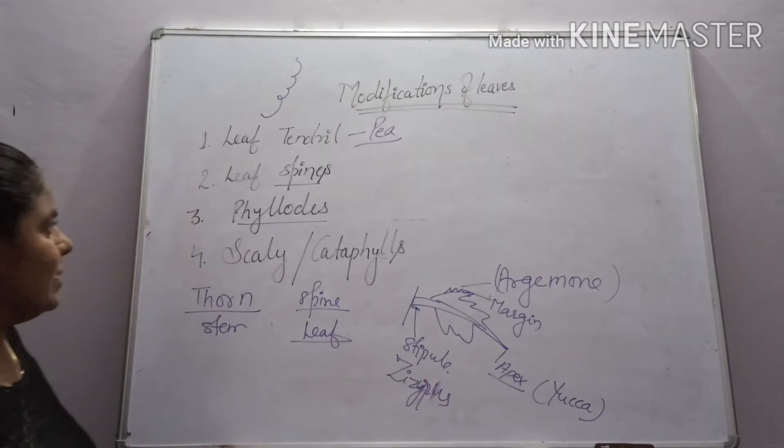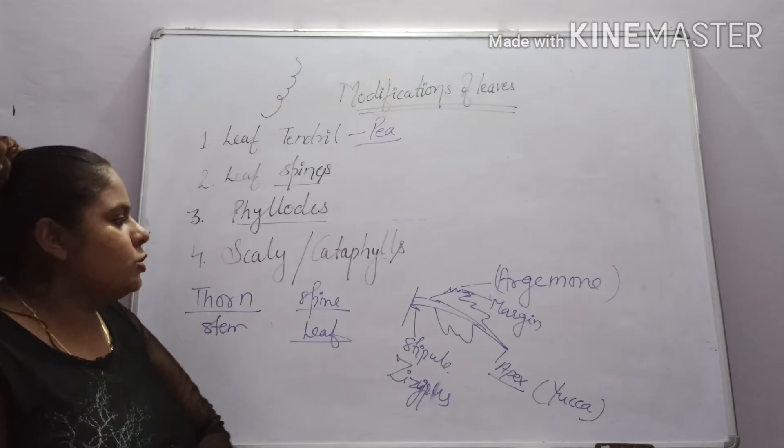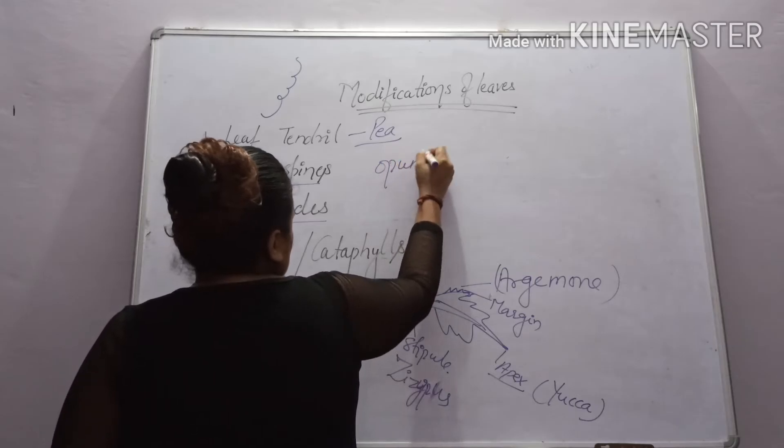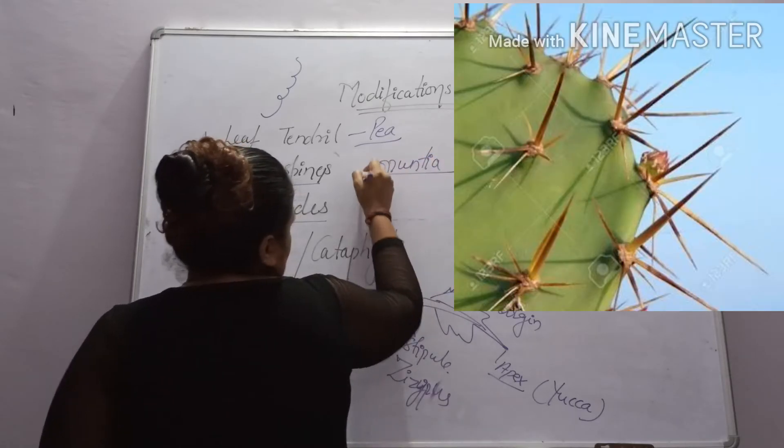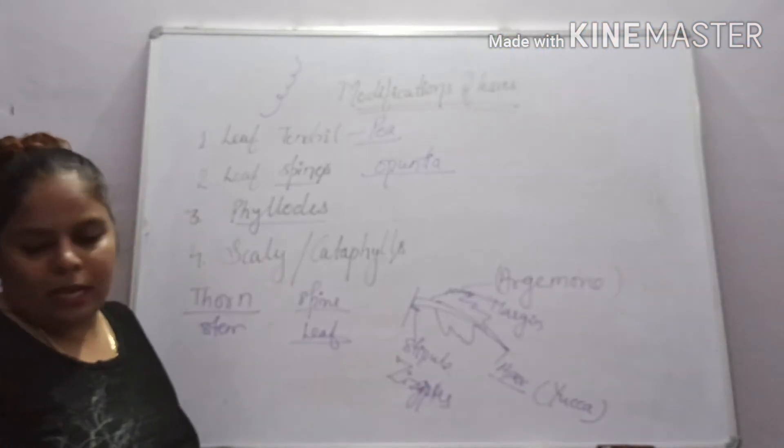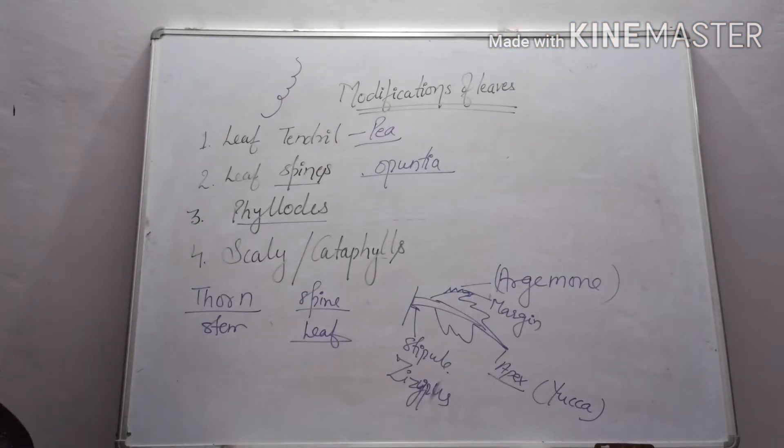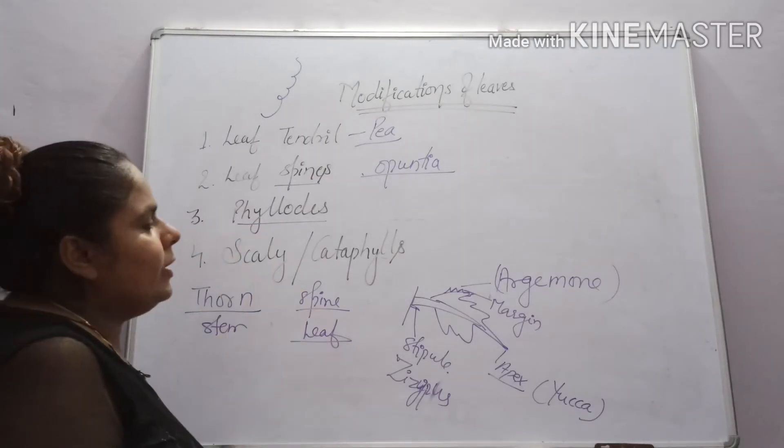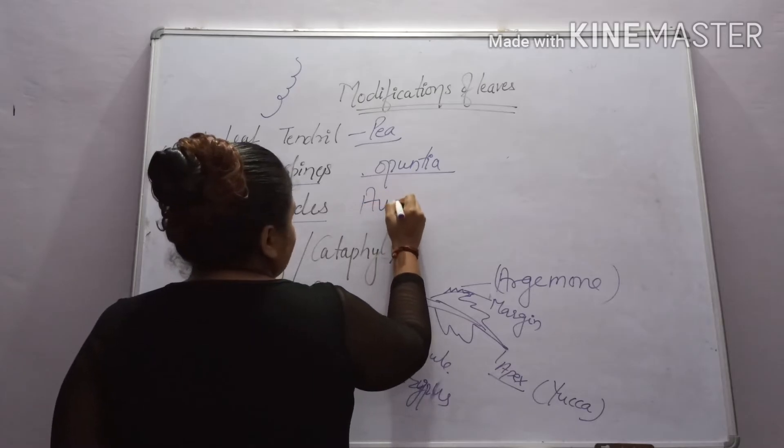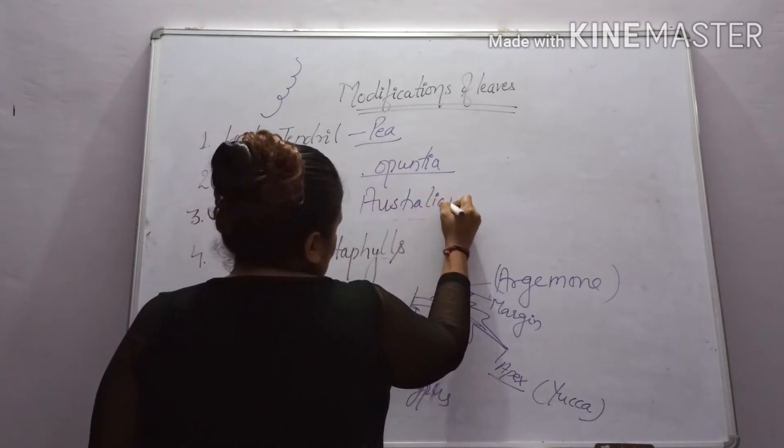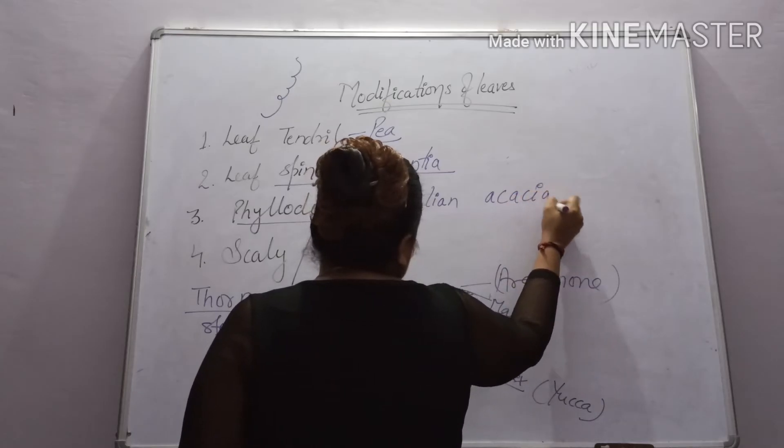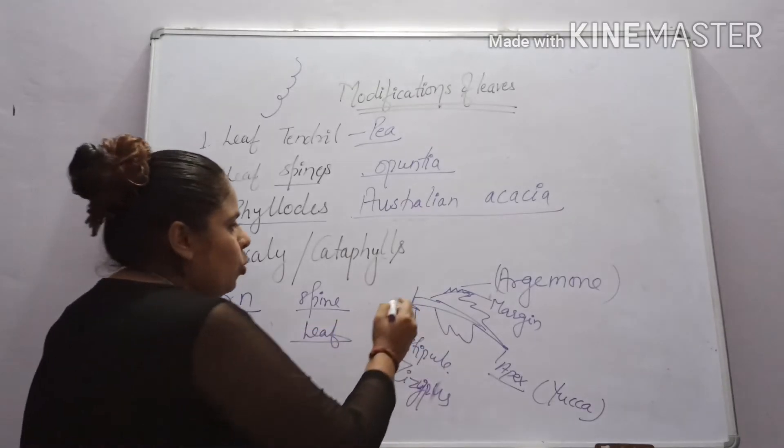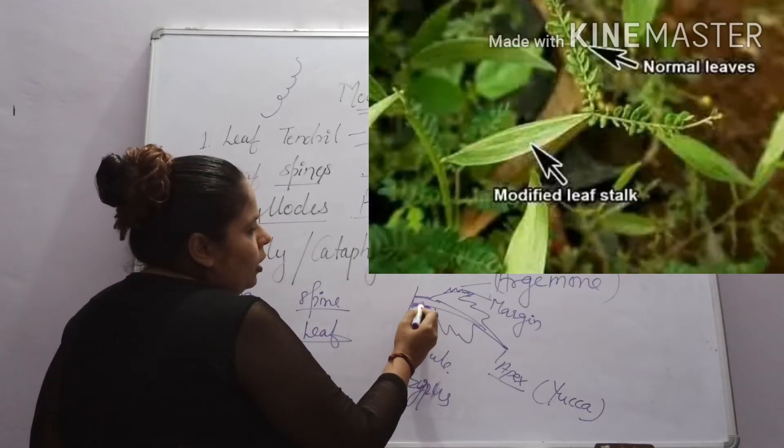Next is the phyllode. What happens in the phyllode? This is the phyllode, in Opuntia. In the phyllode, the leaves are changed into spine. For example, phyllode in Australian Acacia.